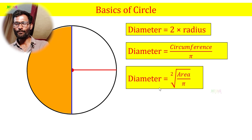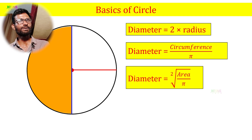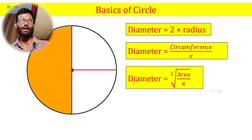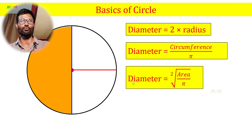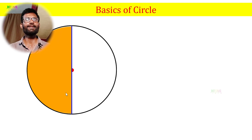Diameter is also equal to the square root of area divided by pi. We can use different formulas to find the diameter depending on what values are available. Next, we will discuss the chord. The chord is not the diameter; it is different. The diameter is a special chord, but any other line segment joining two points on the circle is called a chord.